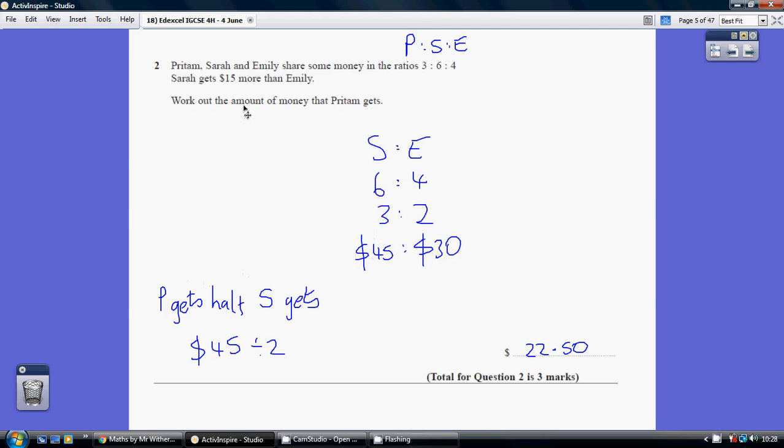Now, we're being asked what is the amount of money that Pritam gets. Well, we can see that Pritam gets 3 shares when Sarah gets 6 shares. So Pritam gets half as much as Sarah. Well, we've just established that Sarah gets $45, so Pritam gets half of $45, which is $22.50. Thank you.